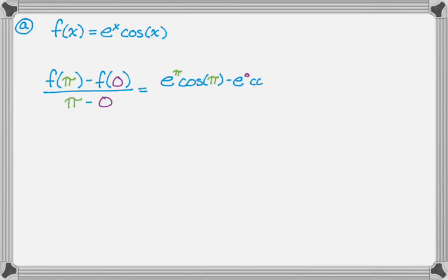So subbing in gives us this. You do have to remember the cosine of pi is negative 1. The cosine of 0 is 1. e to the 0 is 1. e to the pi is just going to stay e to the pi. So with all of that in mind, e to the pi cosine of pi is just going to be negative e to the pi. And then since e to the 0 is 1 and cosine of 0 is 1, so it's minus 1 and then over pi. And that's the answer. So let's move on to the next part.